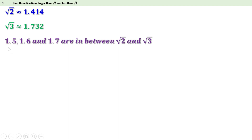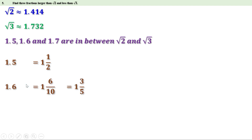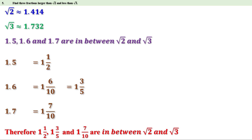Now let us convert these decimals into fractions. 0.5 means 1/2, so 1.5 is 1½. 0.6 means 6/10, and 6/10 equals 3/5, so 1.6 is 1 3/5. 0.7 means 7/10, so 1.7 is 1 7/10. That means 1½, 1 3/5, and 1 7/10 are in between √2 and √3. Here we have found three fractions larger than √2 and less than √3.